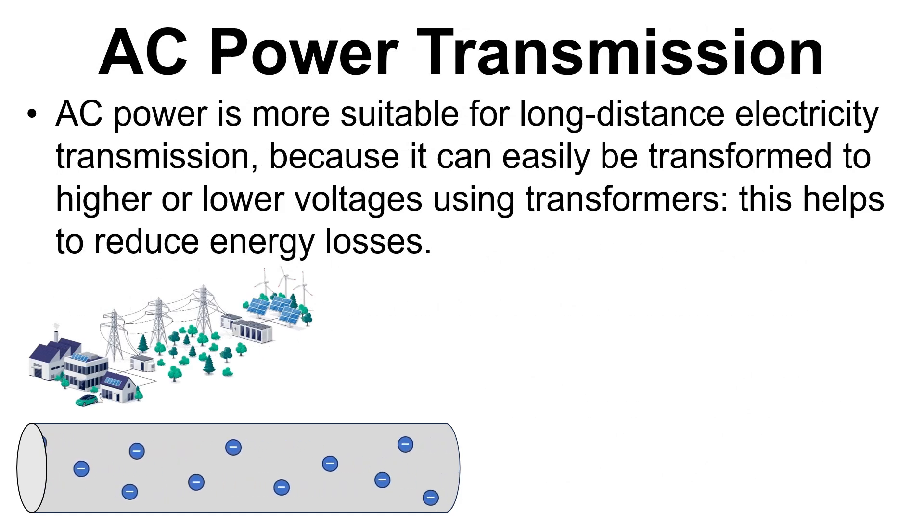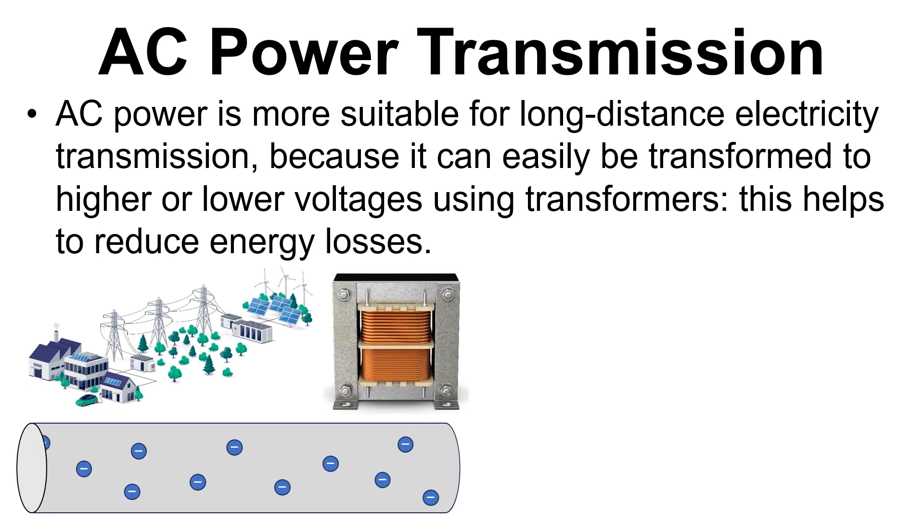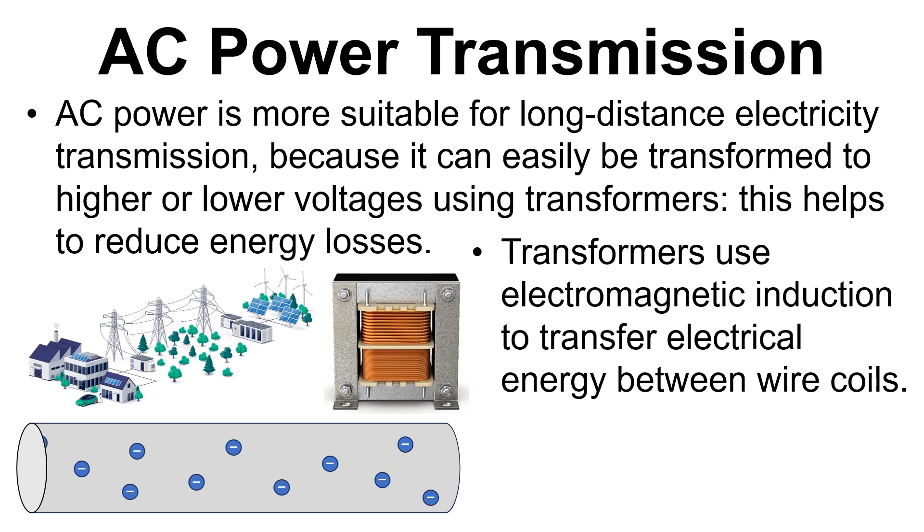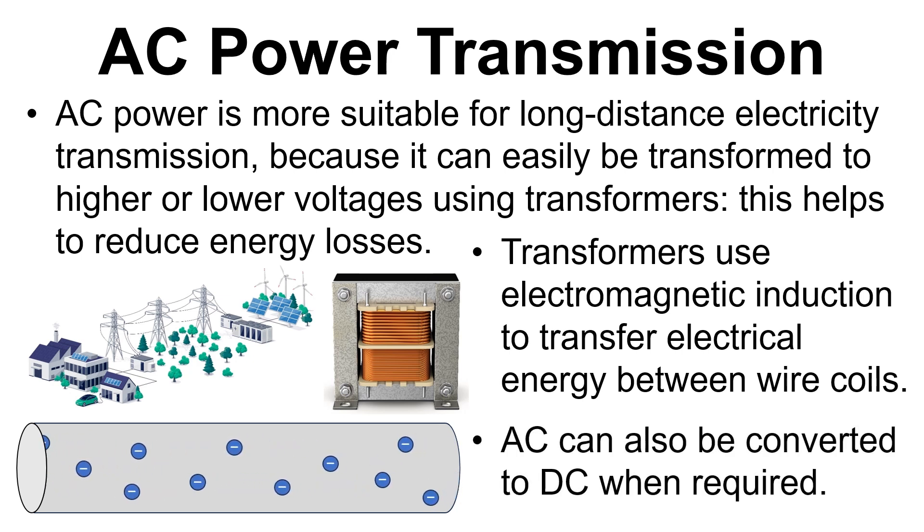AC is more suitable for long distance electricity transmission because it can easily be transformed to higher or lower voltages using transformers. This helps to reduce energy losses in the wires. Transformers use electromagnetic induction to transfer electrical energy between coils. AC can also be converted to DC when required.